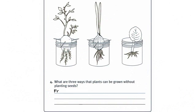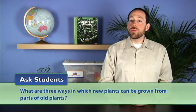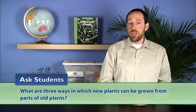Next, distribute a copy of Activity Sheet 10 Part B to each student and have students complete the sheet. Ask students, what are three ways in which new plants can be grown from parts of old plants? Students should answer that new plants can be grown from buds on tubers, from bulbs, and from leaf cuttings. Finally, let students know that in the next activity they will learn about how plants defend themselves to survive.